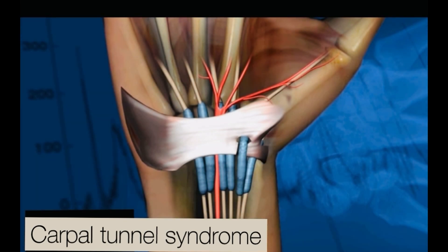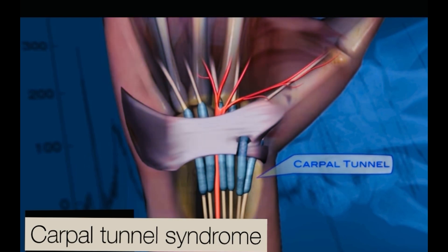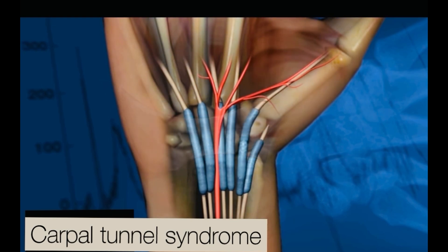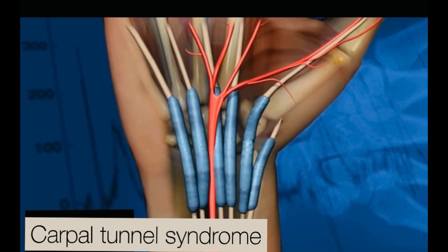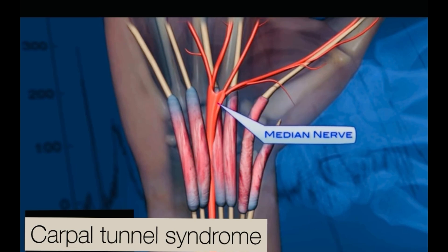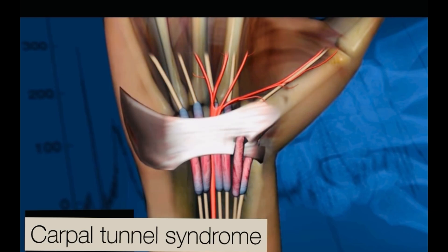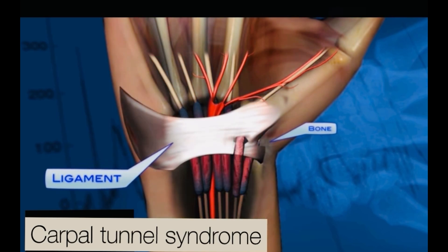The carpal tunnel is made by fibrous tissue and the carpal bones. It houses the flexor tendons, and the median nerve passes through this tunnel at the wrist to reach the hand. Inflammation of the tendons or arthritis of the carpal bones can compress the median nerve through this tunnel — this is what we call carpal tunnel syndrome.